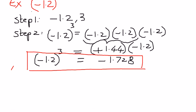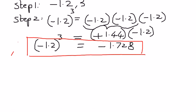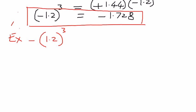Now let's take another simple example. Let's say we have the negative sign outside of the parenthesis this time: negative of 1.2 raised to the power of 3. In step number 1, we identify the base term. The base term here is 1.2. The negative sign is outside of the parenthesis, therefore it will not be part of the base term. The exponential term here is 3.